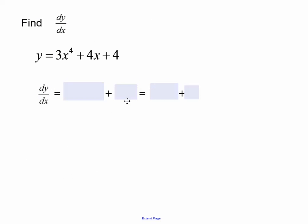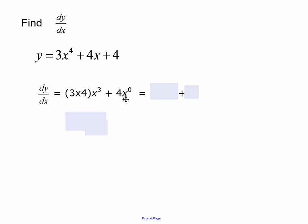Let's look at an example. We're going to find dy/dx for the function 3x to the power 4 plus 4x plus 4. Differentiating the first component: 3 times 4 gives x to the power 4 minus 1, which is 3, so we get 3 times 4 times x cubed. For the next component, 4x to the power 1 goes to 4x to the power 0, and since x to the power 0 is 1, that gives 4. Simplifying: 3 times 4 is 12, so dy/dx equals 12x cubed plus 4.